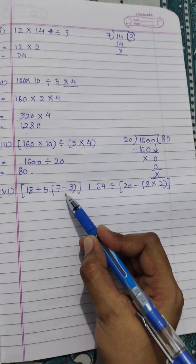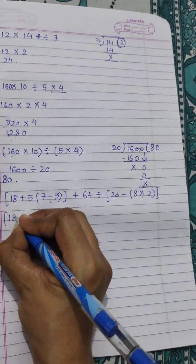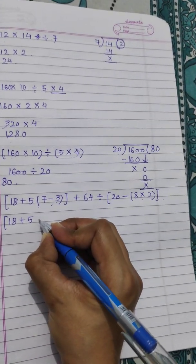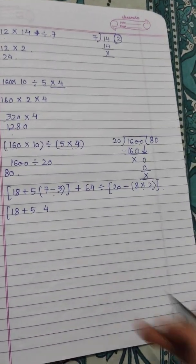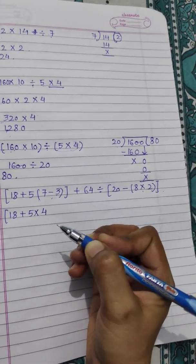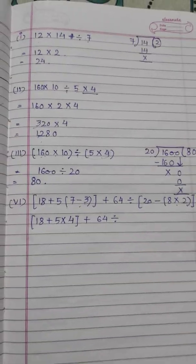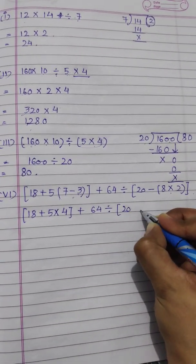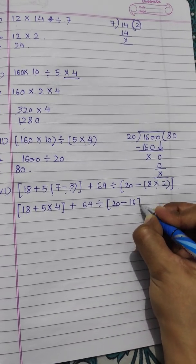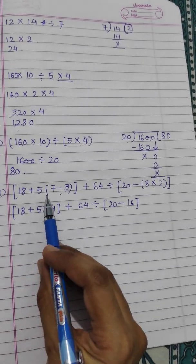Smaller brackets appear inside both square brackets. Copying the remaining parts: 18 + 5 — first solve (7 − 3) = 4. There is no sign between 5 and 4, so the sign is multiplication. Then, for the second square bracket, (20 − 8) = 16. We now have 18 + 5 × 4 + [64 ÷ 16 × 2]. Remember, when there is no sign between two numbers, it means multiplication.